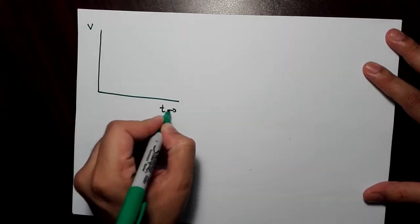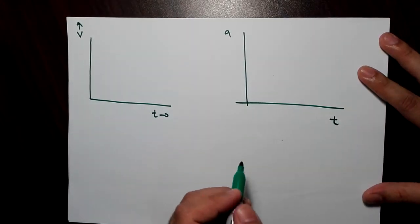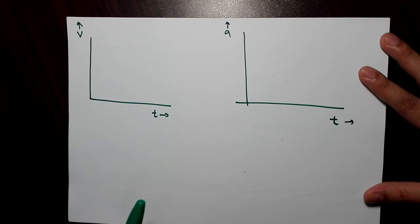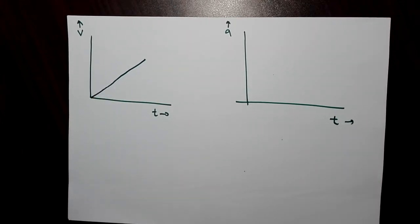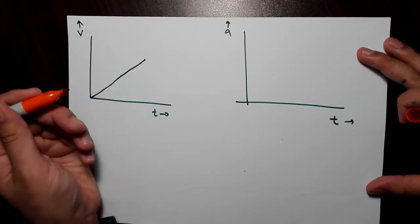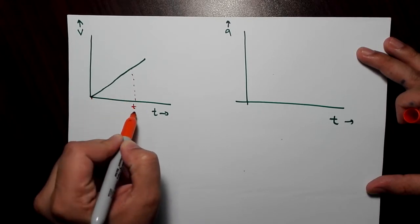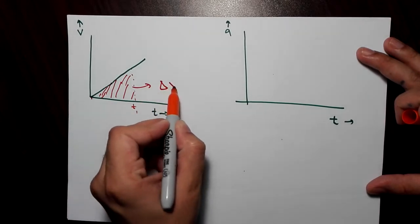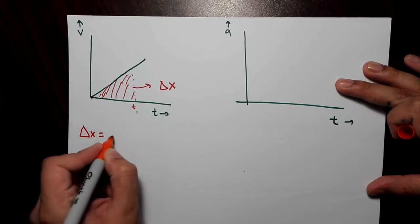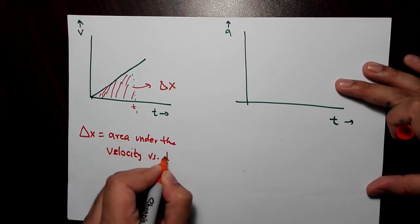Let's discuss how to get the displacement from a velocity versus time graph, and how to get the velocity from the acceleration versus time graph. If you're given a velocity versus time graph, you can find the displacement for any time interval. The displacement is the area under the graph — delta x is the area under the velocity versus time graph.